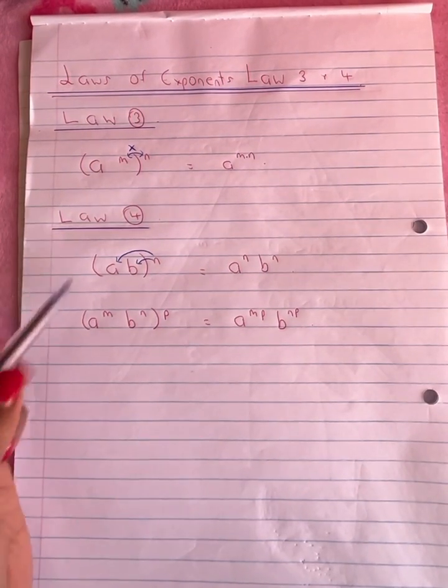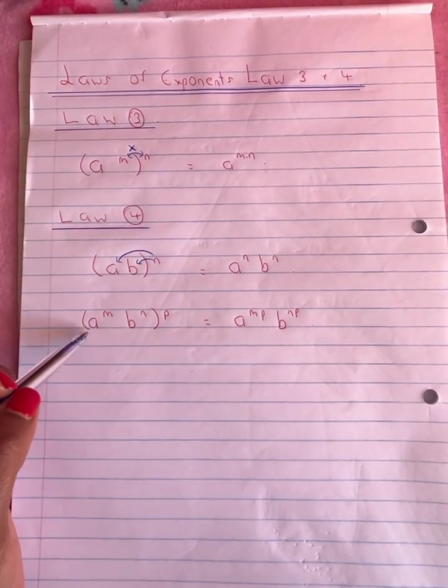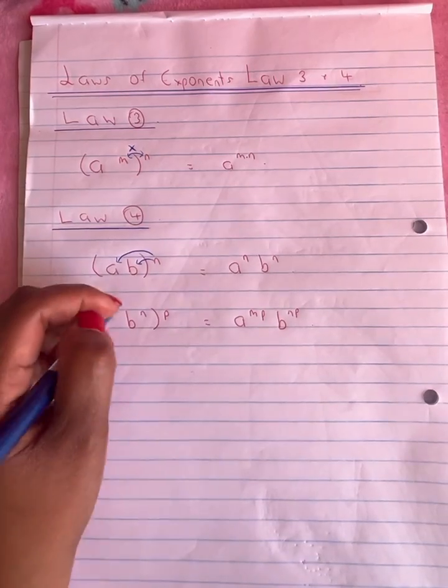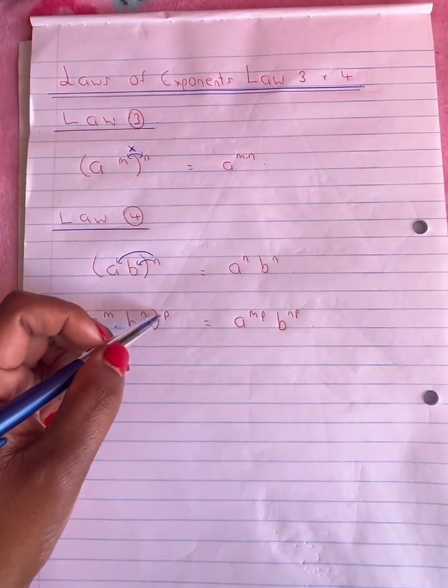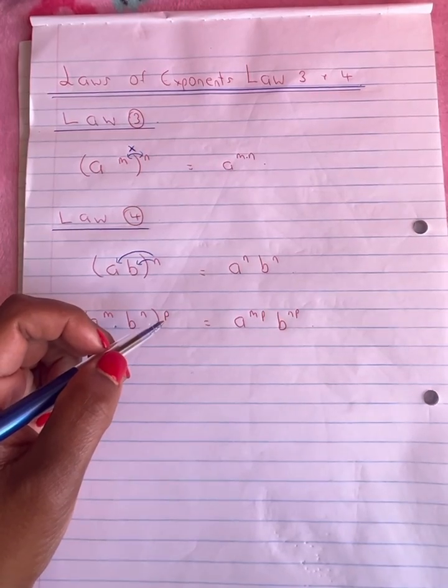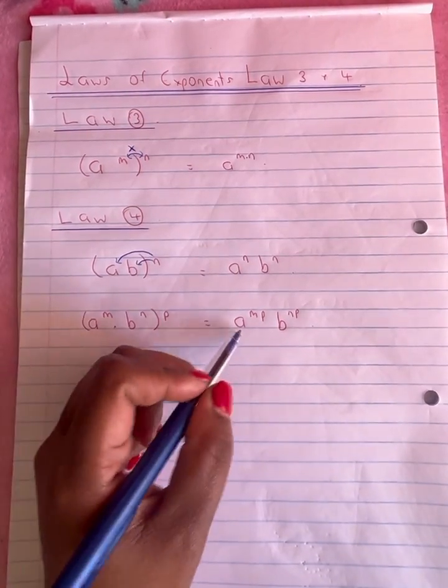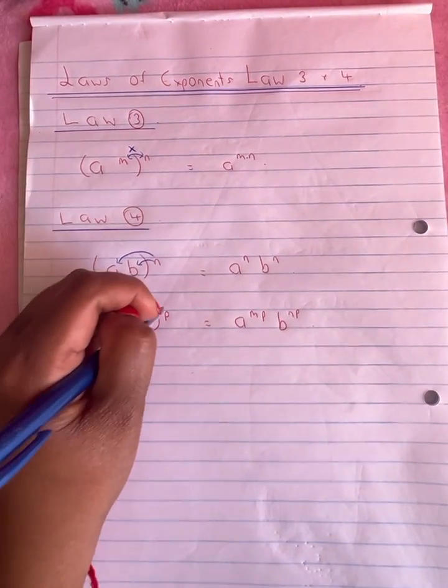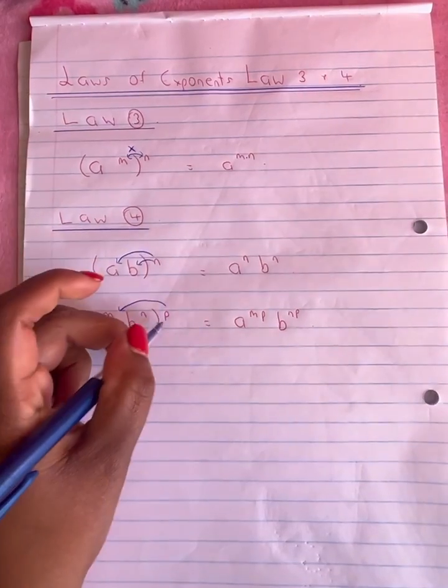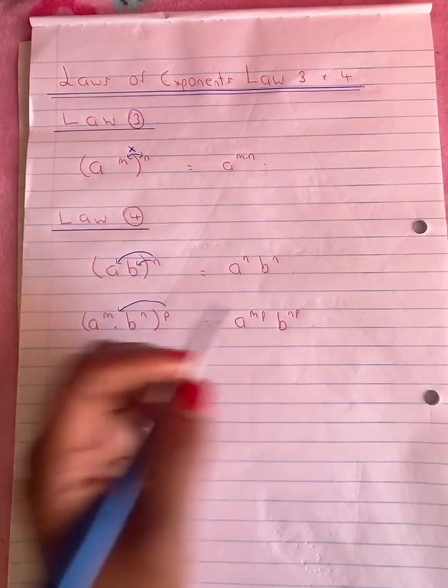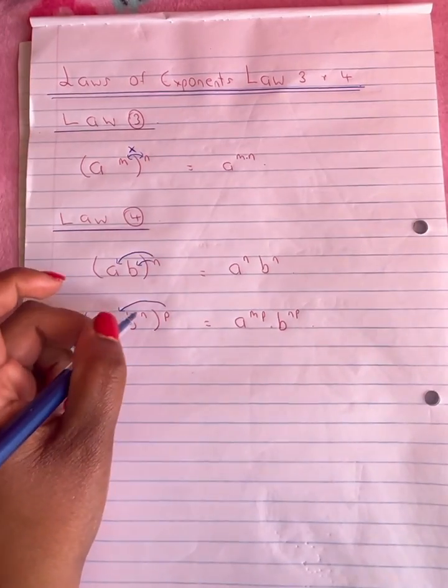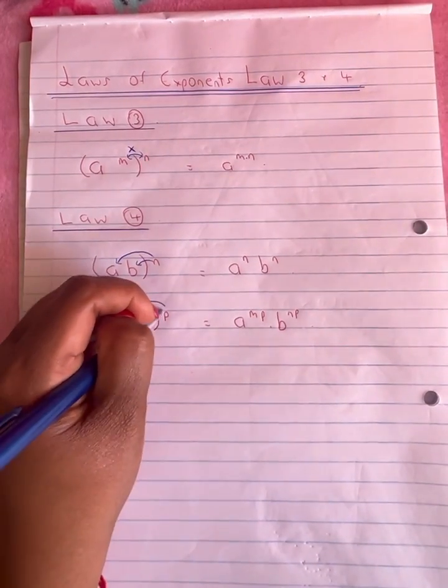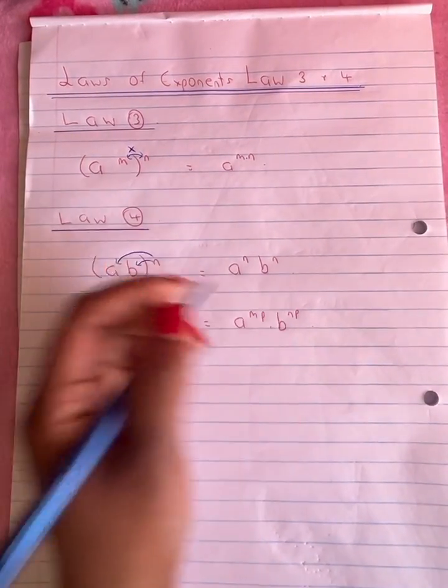A second version of law 4 shows that a to the power of m times b to the power of n all raised to the power of p outside the brackets will be equal to a to the power of m times p times b to the power of n times p.